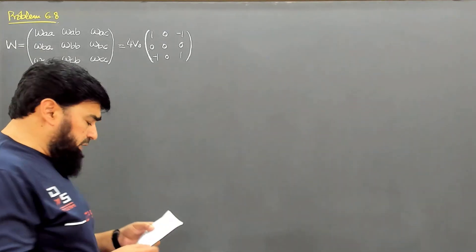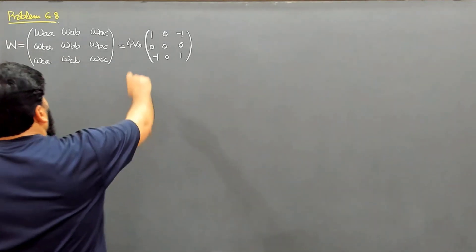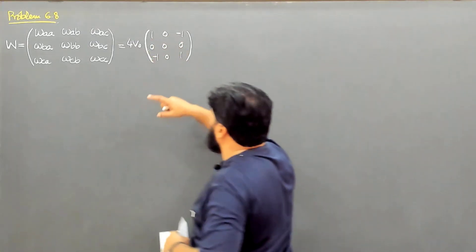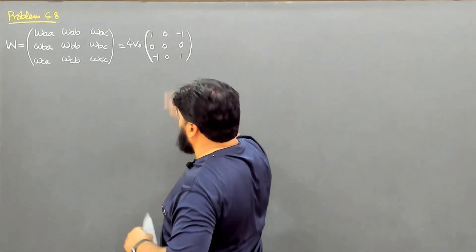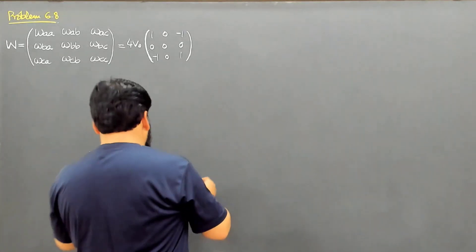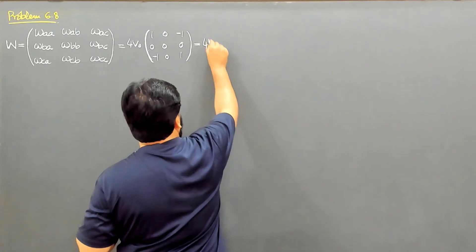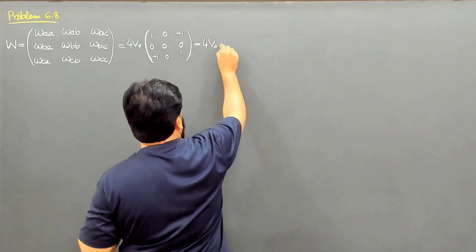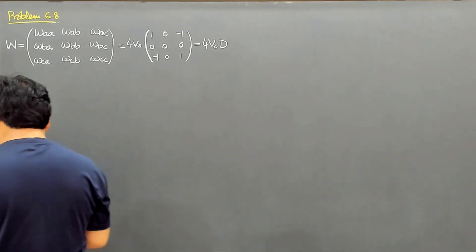I have found all the elements of this matrix. I have taken 4V0 as common: 1, 0, minus 1, because the element was minus 4V0, and so on. I can write this equal to 4 times V0, and then this matrix I write as matrix D.